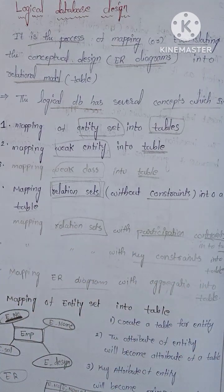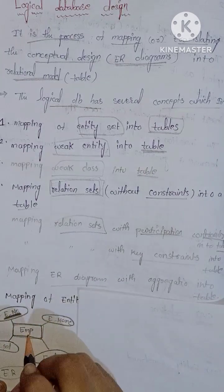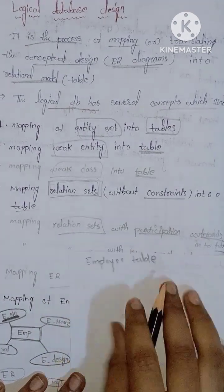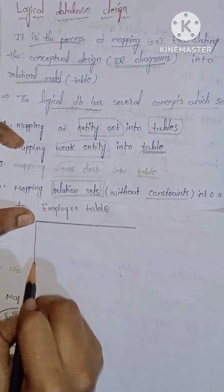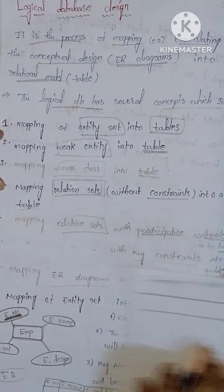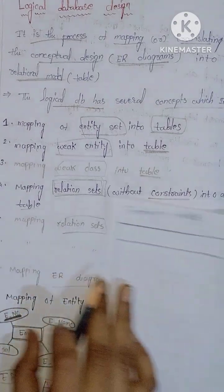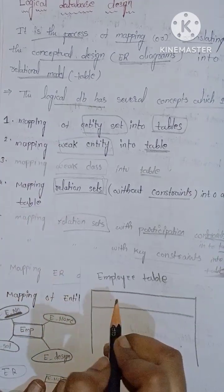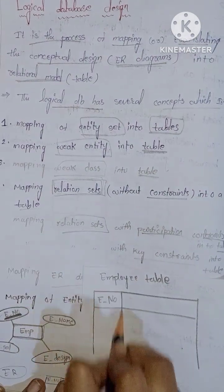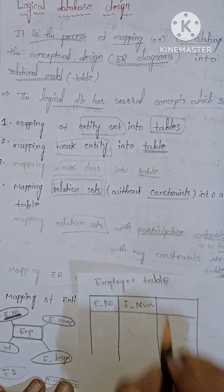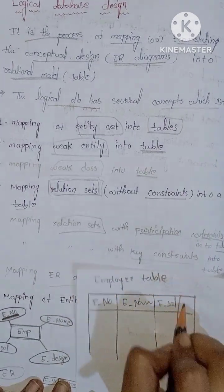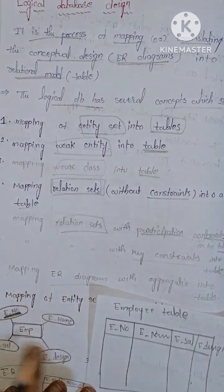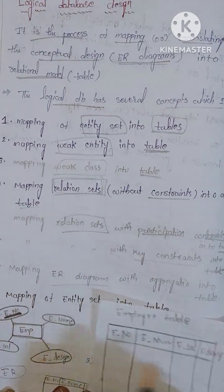We have a table — the employee details table. We have a relational table with the following attributes as column headers: employee name, employee number, and employee salary. This shows the mapping of the entity into a relational table.